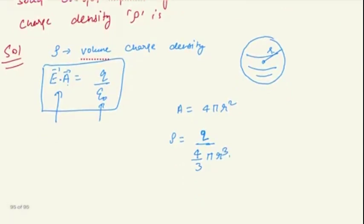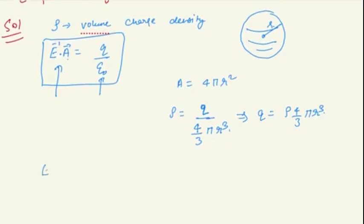So we can write Q is equal to rho times 4 by 3 pi r cubed. Just substitute all the values. So electric field E, as we need to find, multiplied by 4 pi r squared equal to rho times 4 by 3 pi r cubed upon epsilon naught.